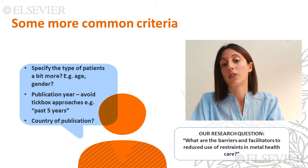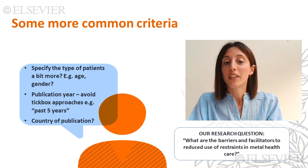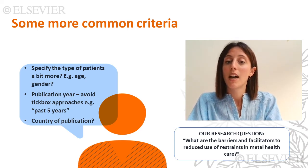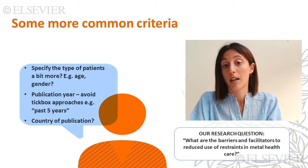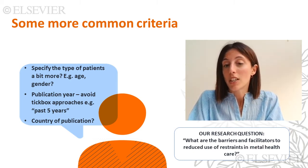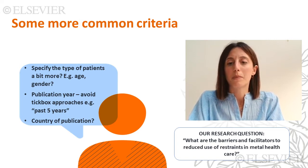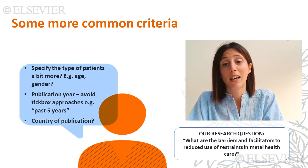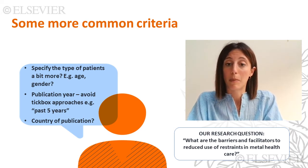Publication year is another criterion you can consider, but please check video one first. Rather than using a tick-box approach and saying I'll only consider papers published within the past five years, I invite you to deploy your critical thinking. Consider whether there have been any major changes in mental health care delivery in the past years — any major reforms, acts, or guidelines that changed the delivery of mental health care specifically around restraints. That could be your cut-off point in terms of publication age.